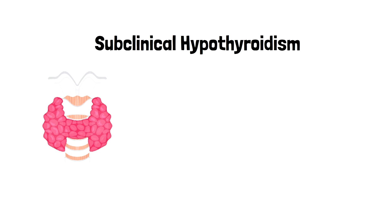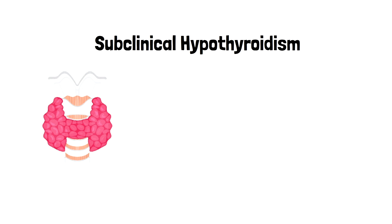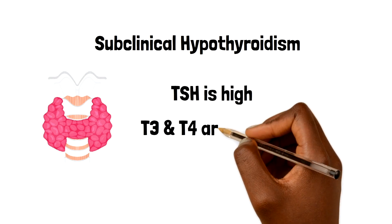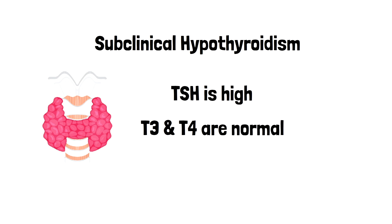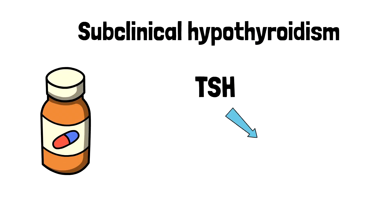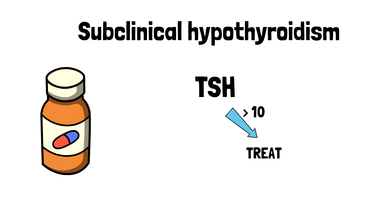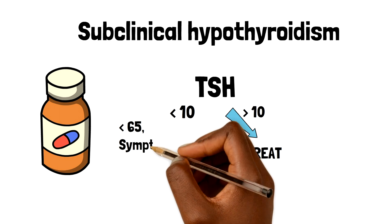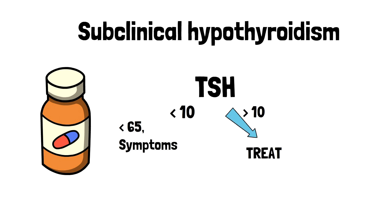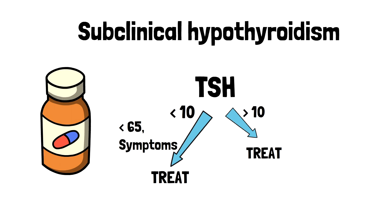We should also discuss subclinical hypothyroidism, in which TSH is high but T3 and T4 are within the normal range. If TSH is more than 10 and T4 is within the normal range, we can consider treating with levothyroxine. If TSH is high but less than 10, and T4 is normal — confirmed on two occasions at least three months apart — and the patient is less than 65 years old with symptoms of hypothyroidism, we offer a trial of treatment for about six months.